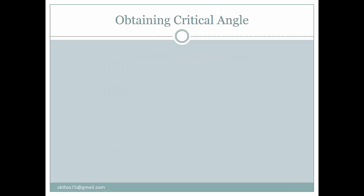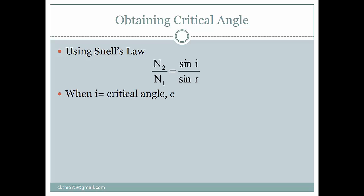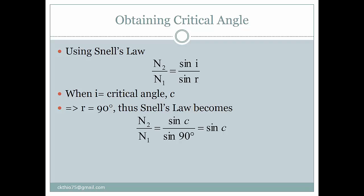So how do we obtain the critical angle? We can use Snell's law: n2 over n1 equals sine i over sine r. When i is equal to the critical angle, by definition r will be equal to 90 degrees. Thus, Snell's law becomes n2 over n1 equals sine c over sine 90.